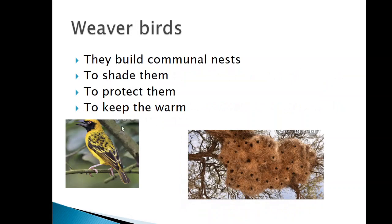Our next animal is a weaver bird. These are small birds. How do they survive in their environment? They build communal nests. Communal meaning they are able to be accessed by many birds — so many birds use these nests. They use them to shade themselves, to protect themselves, or to even keep themselves warm.